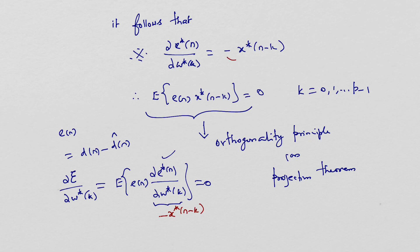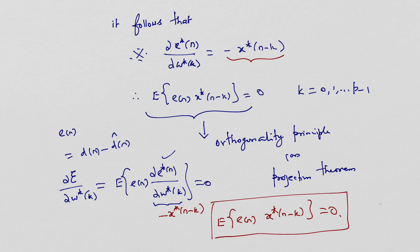Substituting, we get E[e(n) · x*(n minus k)] = 0. This is called the orthogonality principle, or principle of projection: the cross-correlation between the error e(n) and the input x*(n minus k) equals zero. This holds not just for one value but for all values of k from zero to p minus one.